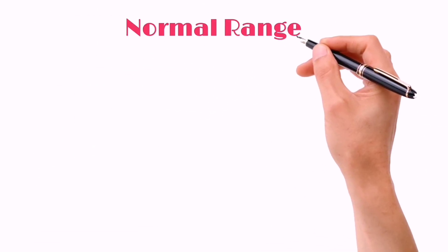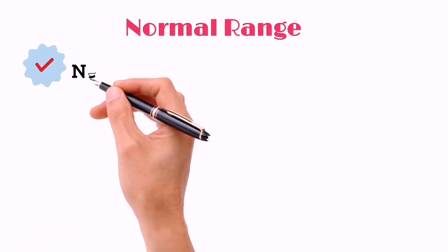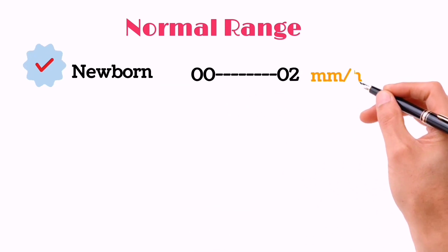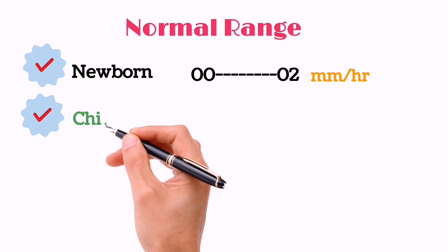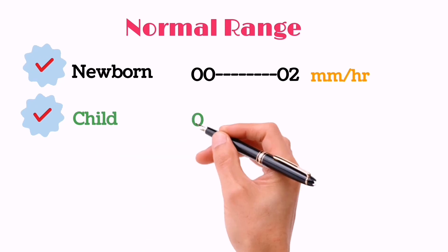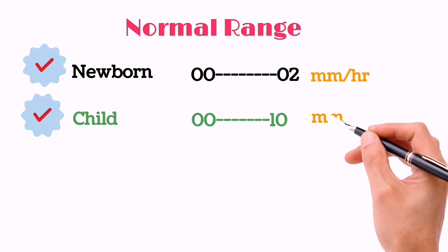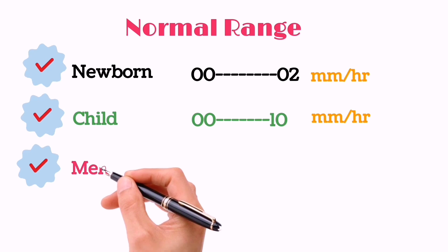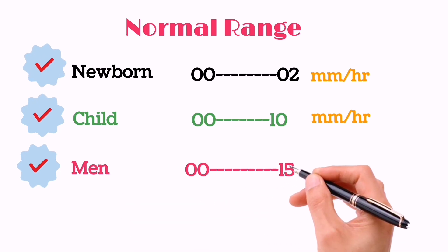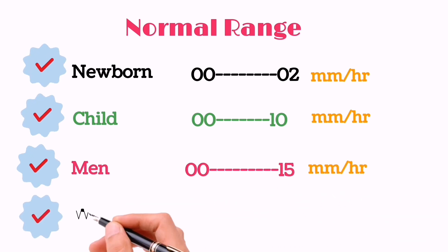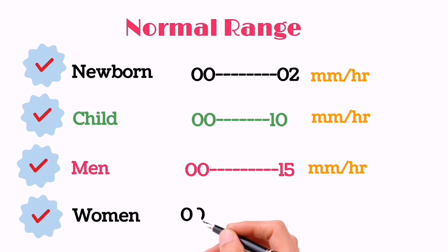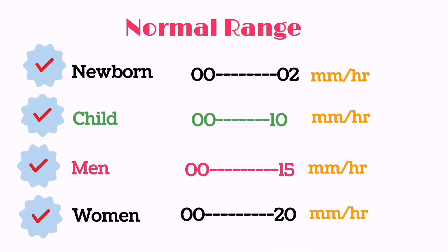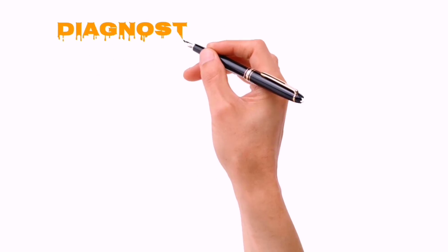Now let's talk about the normal range of ESR. For a newborn baby, it is 0–2 mm per hour. For a child, it is 0–10 mm per hour. For men, it is 0–15 mm per hour. For women, it is 0–20 mm per hour.